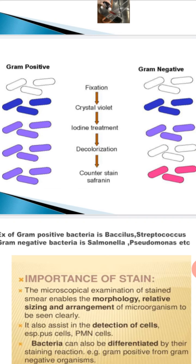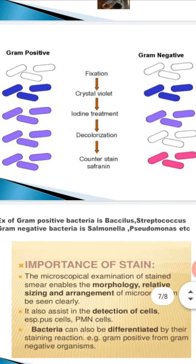When we put crystal violet, what happens? Both gram positive and gram negative bacteria become purple — they take the color of crystal violet. At this stage you cannot distinguish between gram positive and gram negative bacteria.